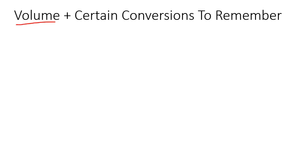In this lesson, we're going to talk about volume conversions, and I'm going to add in a few extra conversions that you need to remember. With volume, we're typically measuring things like liquid, like water. So if you're busy baking or cooking, very often they'll tell you to use things like 500 millilitres, or 2 litres, or we also get kilolitres, for example.